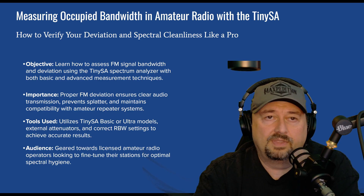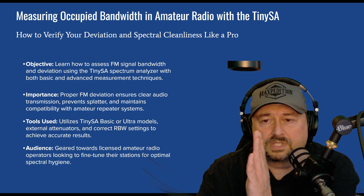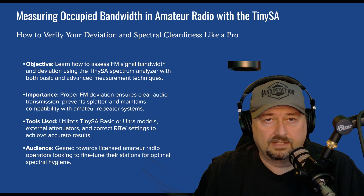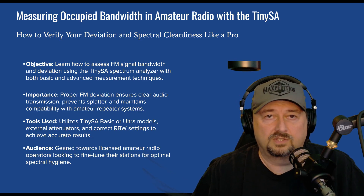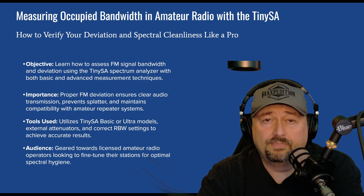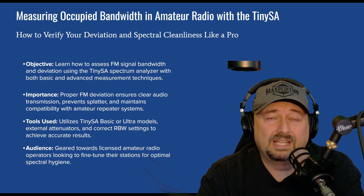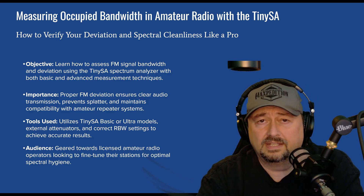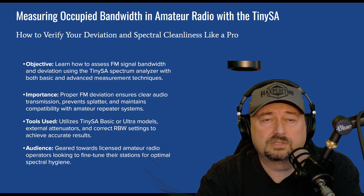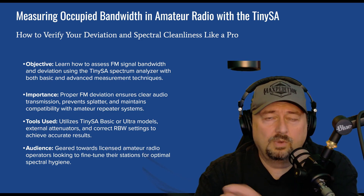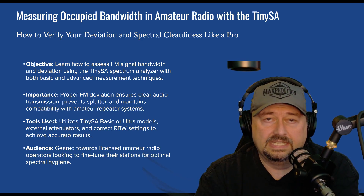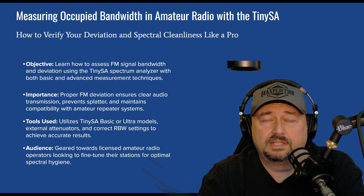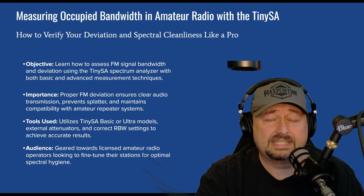With frequency modulation, your signal moves back and forth ever so slightly. When it is demodulated on the other side, the amount of deviation is how it extracts that code and produces your audible signal. With FM we typically move around plus or minus 5 kilohertz. Plus we have a little extra when we add voice or sound on top of that. We want to make sure our deviation is accurate so we have a clear audio transmission, prevent splatter, and have a clean signal all around.